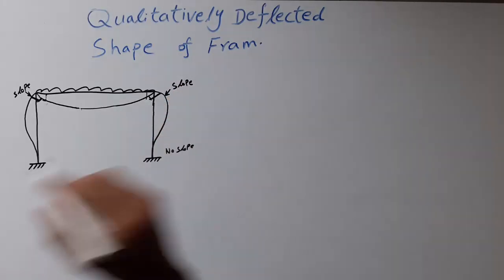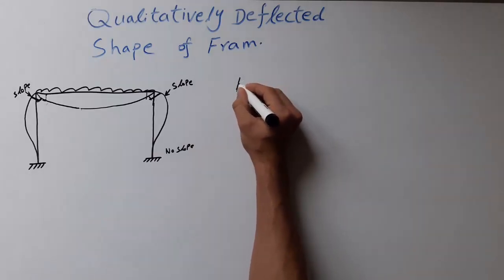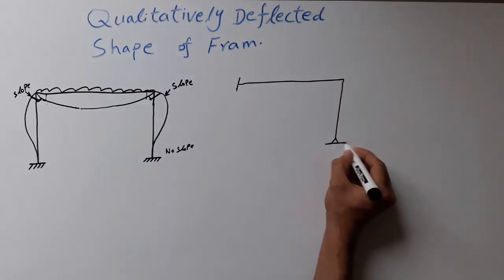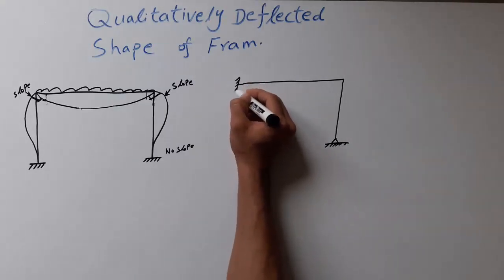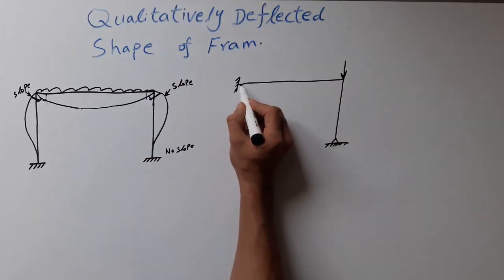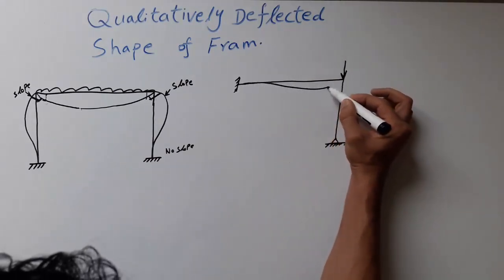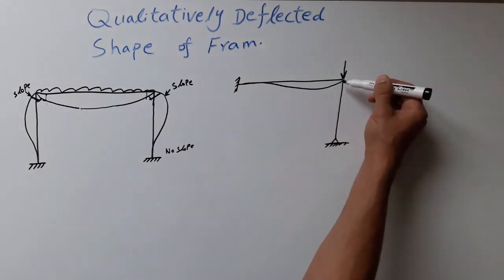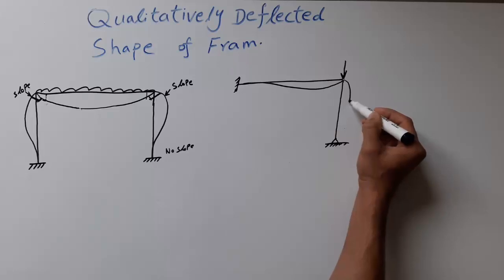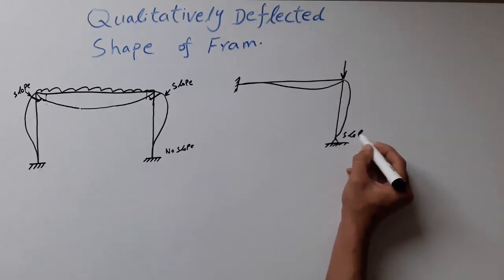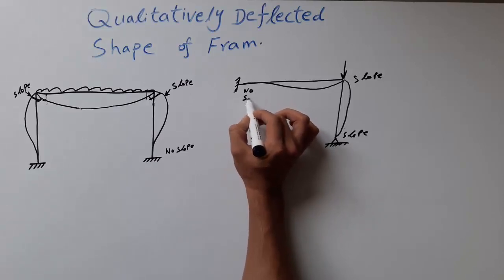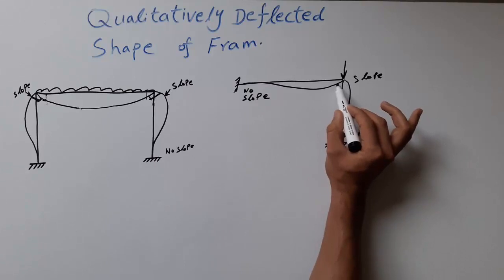Now the second shape — we have pinned supports on both ends and a point load acting at the far end of the column. The deflection shape would be something like this. Because the load is acting downward on the column, the column will deflect accordingly. We don't have any fixed ends, so it will make slope on both ends — we have slope at the bottom and also slope on top. We maintain the 90-degree angle, similar to the previous diagram.